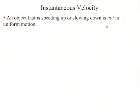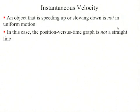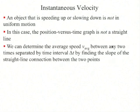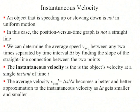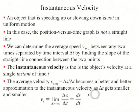An object that is speeding up or slowing down is not in uniform motion. In this case, the position versus time graph is not a straight line but is curved. We can determine the average speed between any two times by finding the slope of the straight line connecting those two points. But what we'd like to find is the instantaneous velocity — the object's velocity at a single instant of time t. The average velocity delta s over delta t becomes a better and better approximation to the instantaneous velocity as delta t gets smaller and smaller.